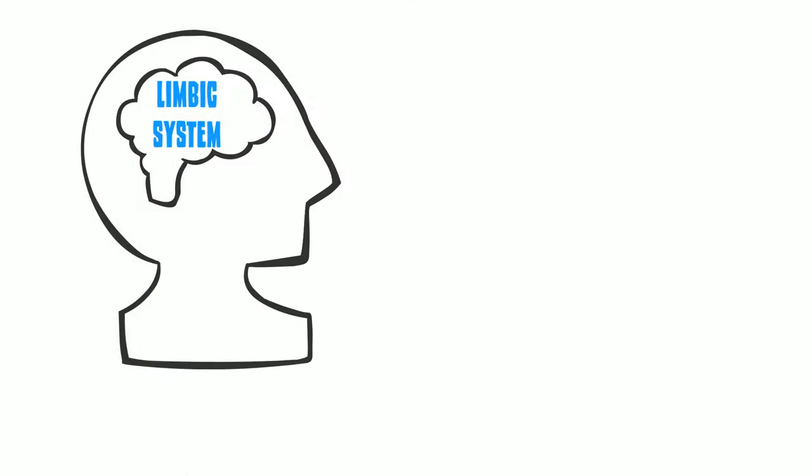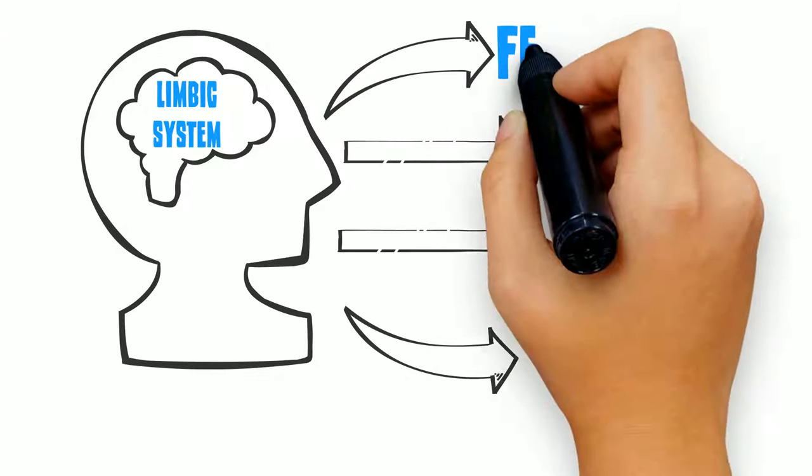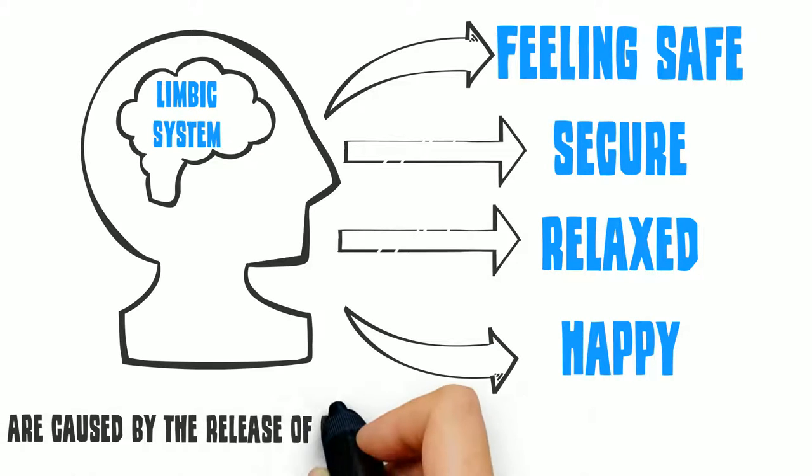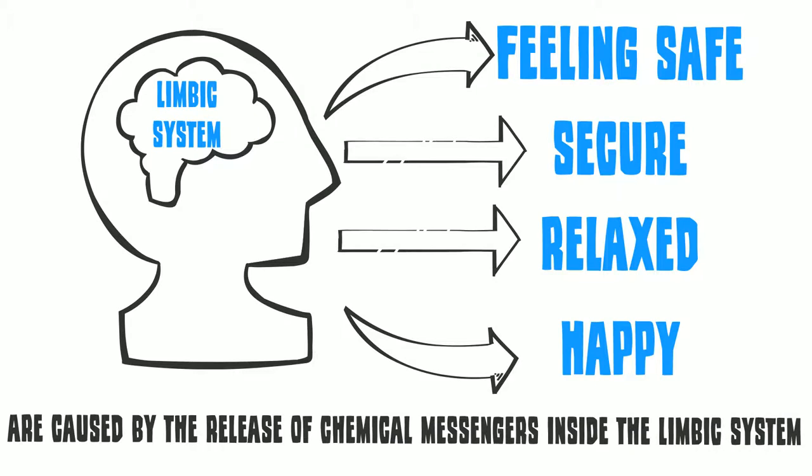Narcotics work by influencing a part of our brain called the limbic system. The limbic system regulates our mood. Positive emotions, such as feeling safe, secure, relaxed, and happy, are caused by the release of chemical messengers inside the limbic system.